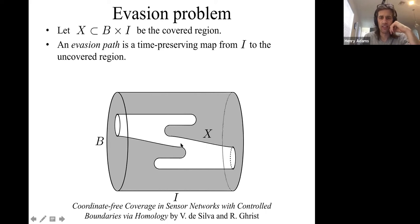What is an evasion path? It's a continuous map that moves from time zero to time one that's in the white region, never seen by the sensors. An evasion path can't go backwards in time. An evasion path always has to be moving forwards.